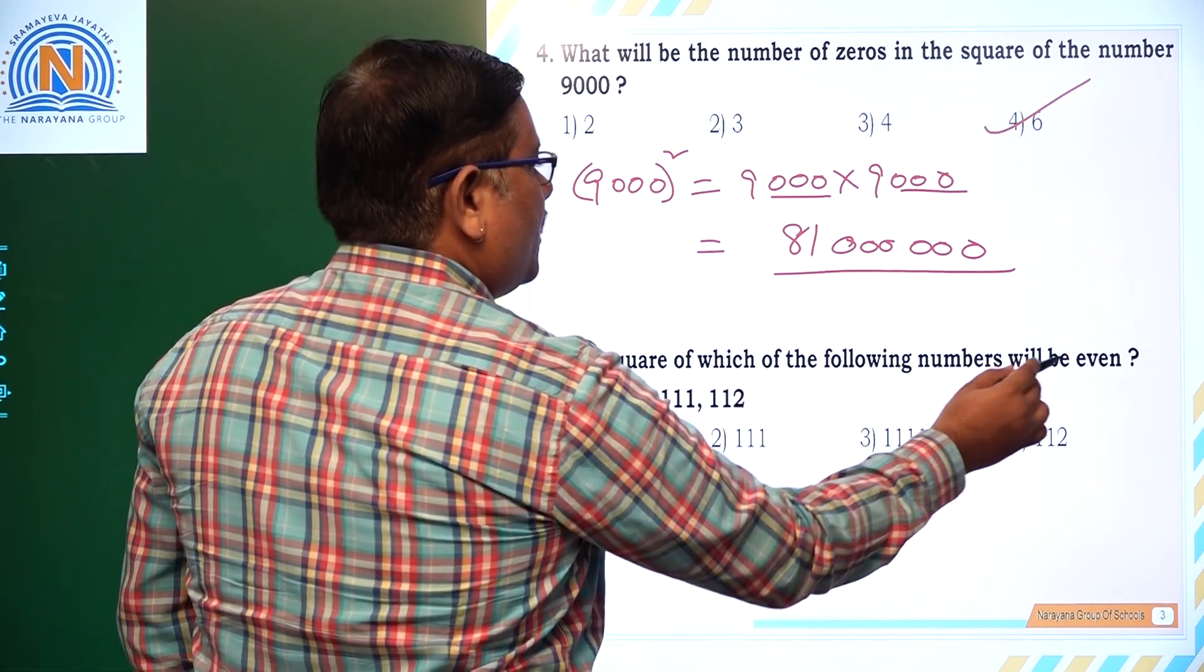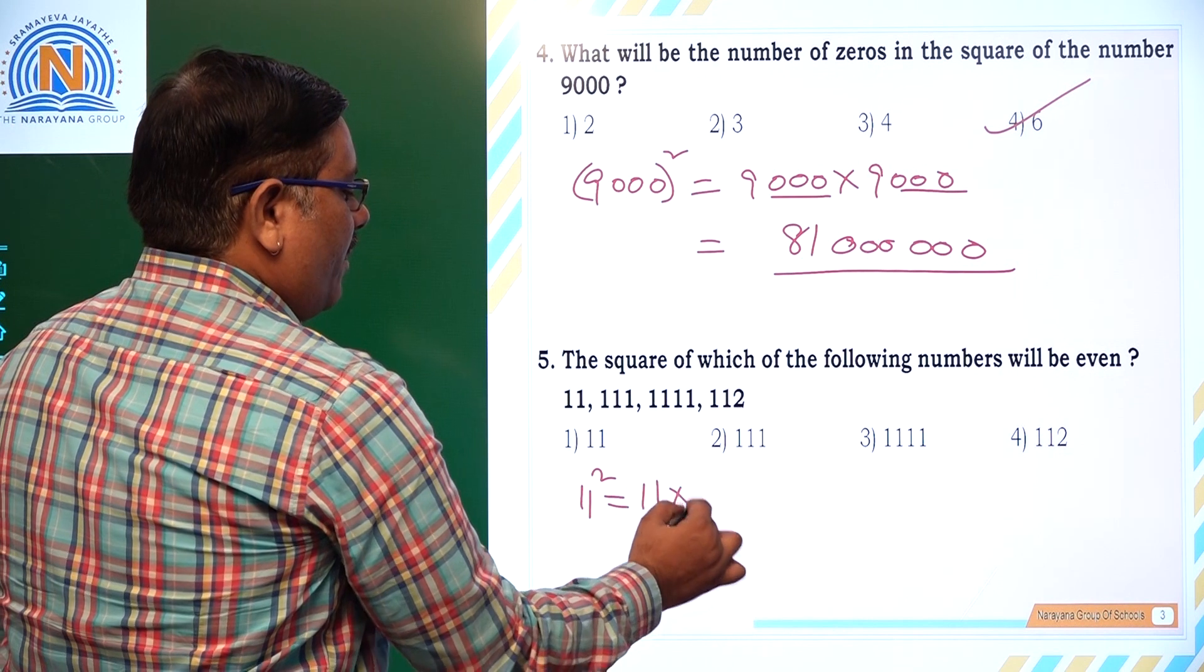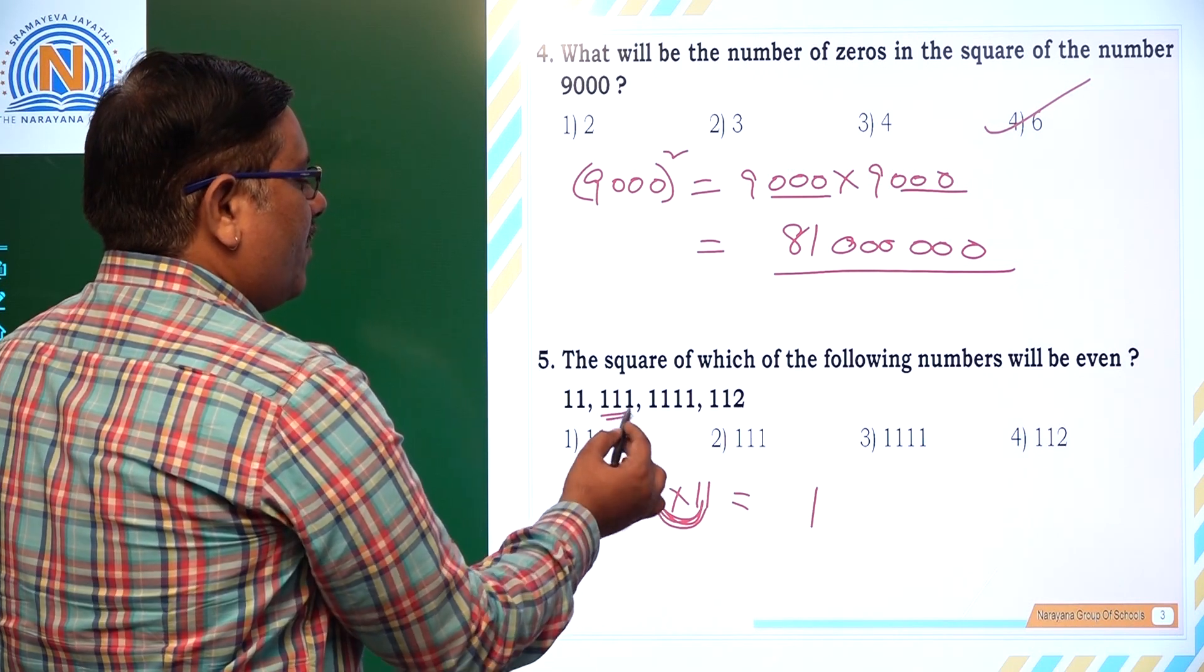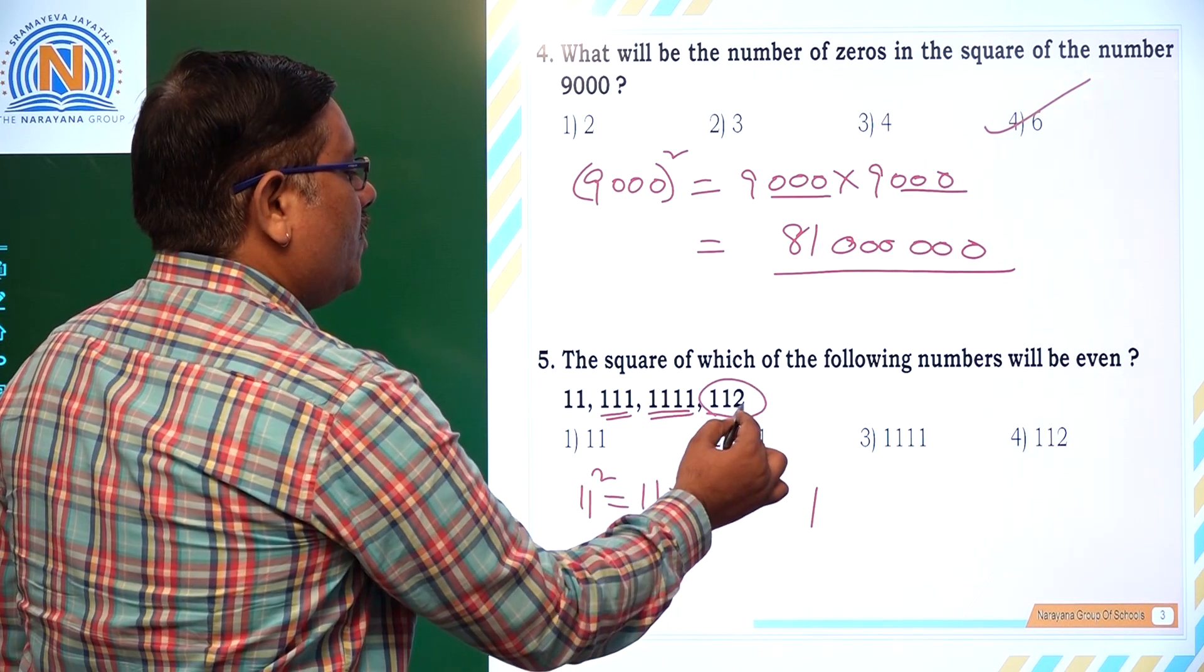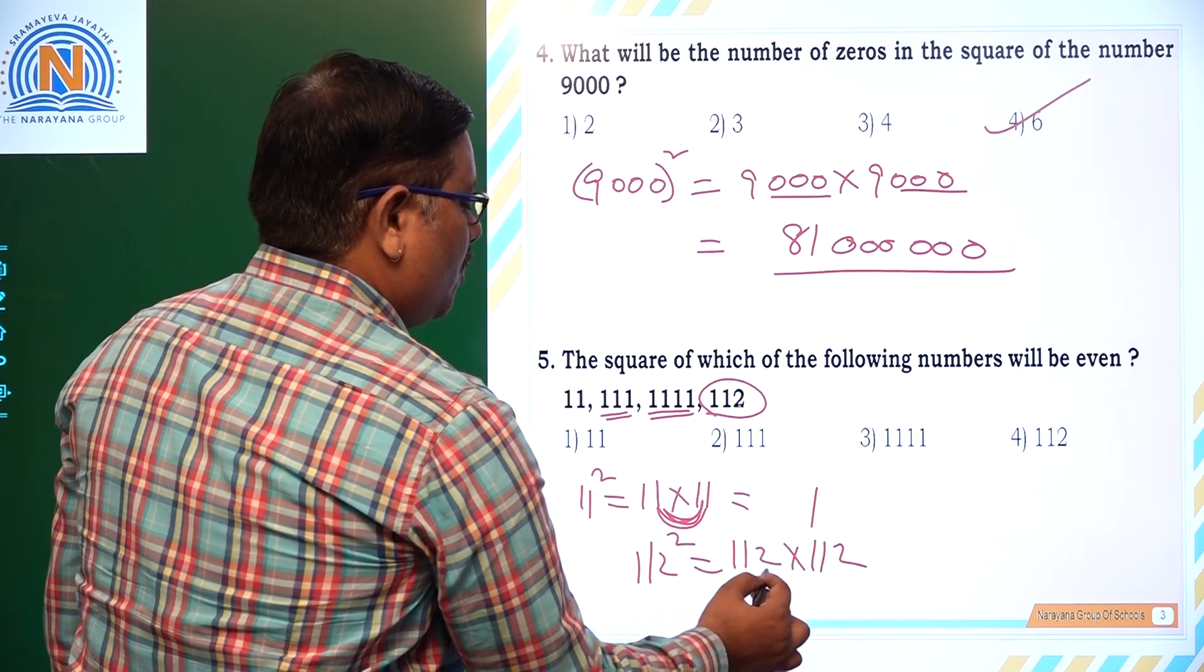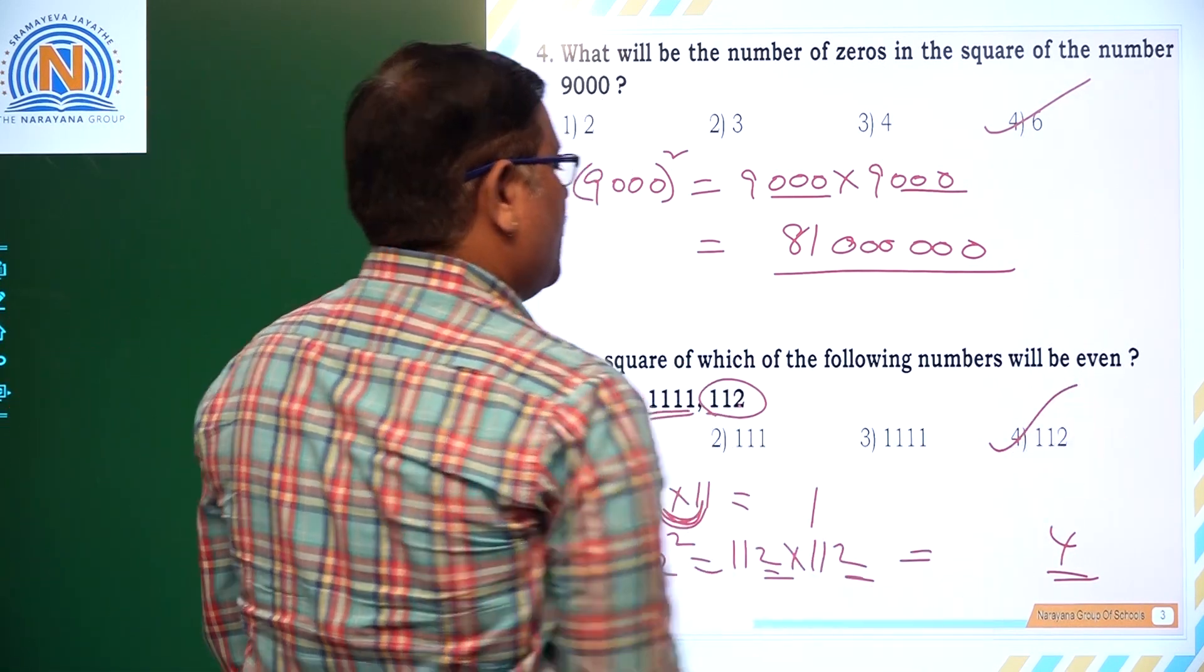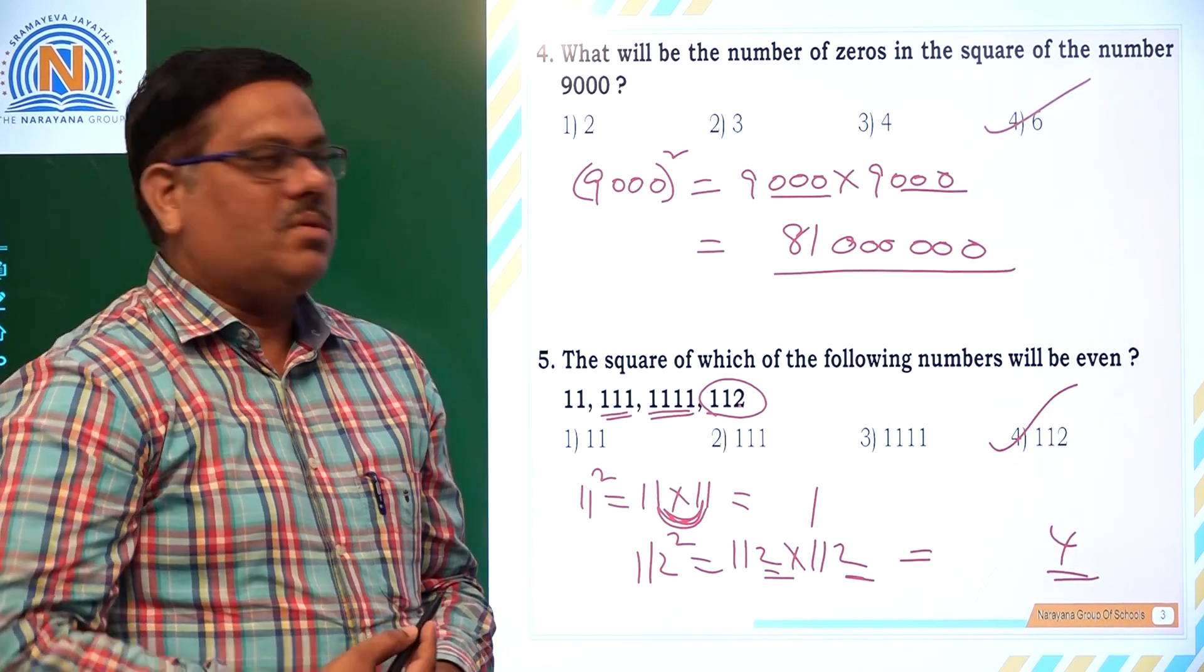Now, the square of which of the numbers will be even? If you take 11 squared, that is 11 into 11. 1 into 1 gives 1, so that is not even. Same thing with 111, same with 1111. But 112, if you take, units digit is 2. So 112 squared means 112 into 112. 2 times 2 is 4, that becomes the unit's digit, so definitely it is an even number. So out of all this, fourth option is the right answer.